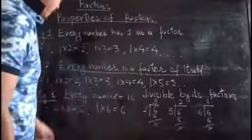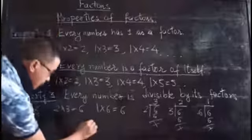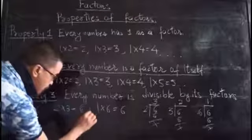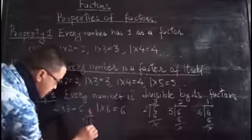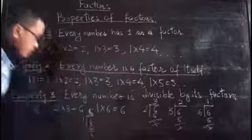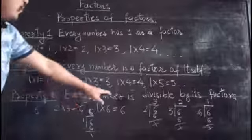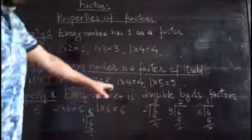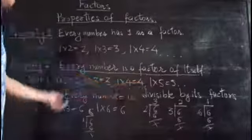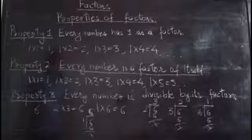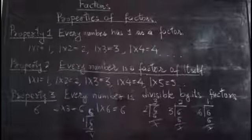If you divide six by one, you get six — no remainder. If you divide six by six, you get one — no remainder. So every number is divisible by each of its factors. These are the three properties regarding factors.